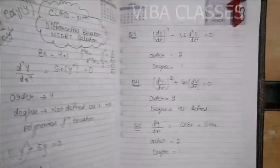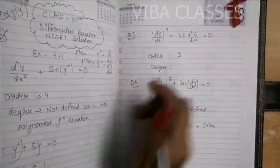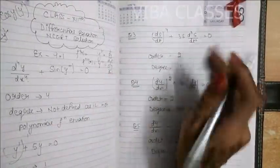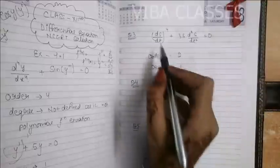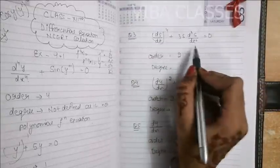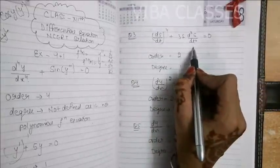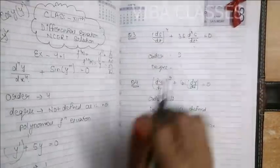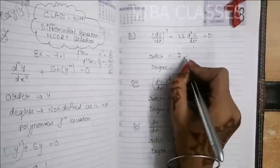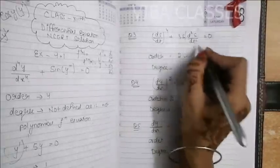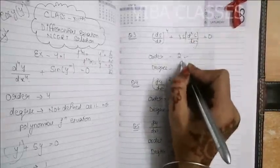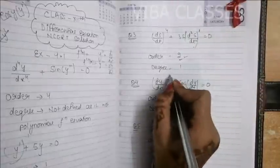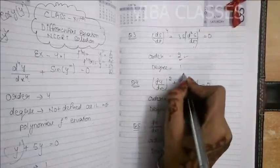Question number 3 — this is also a polynomial. The maximum derivative present is a second order derivative, so the order is 2. The degree is the power of the highest order term, which is 1, so degree is 1.